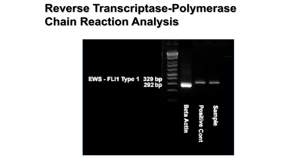Another approach is reverse transcriptase polymerase chain reaction analysis. In this technique, RNA is extracted from the tumor sample, converted into cDNA, and gene-specific primers are used to detect the translocation. In this technology, both partners are detected. However, I will discuss the caveats in the next few slides.